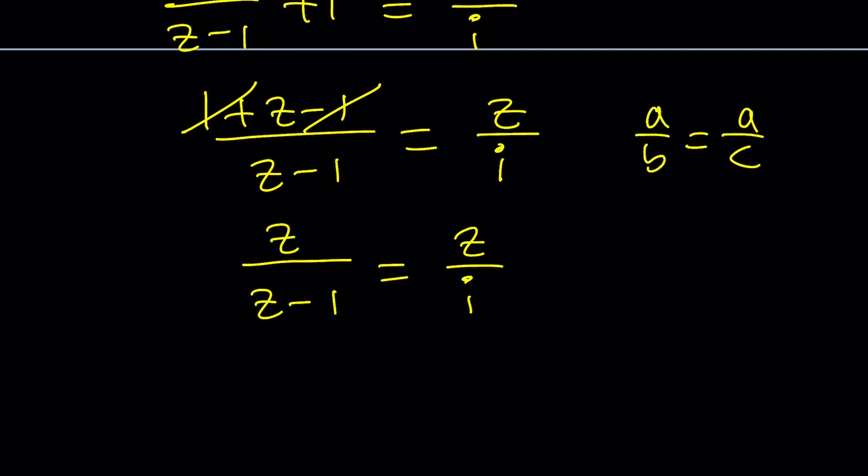B equals c, right? Probably. Maybe cross multiply and get ac equals ab. And then from here, cancel out the a. Uh-oh. You've got to be careful because a can be zero. What about this? If a is zero,